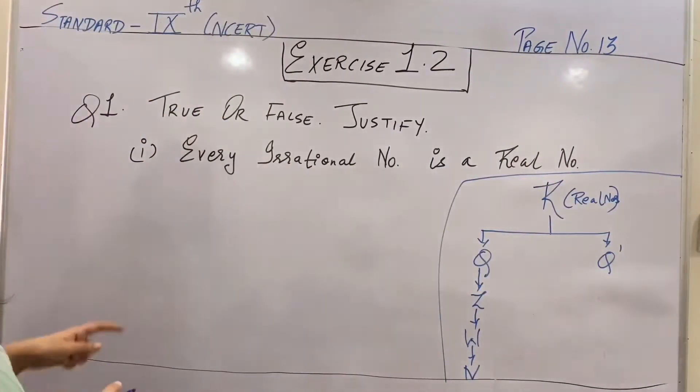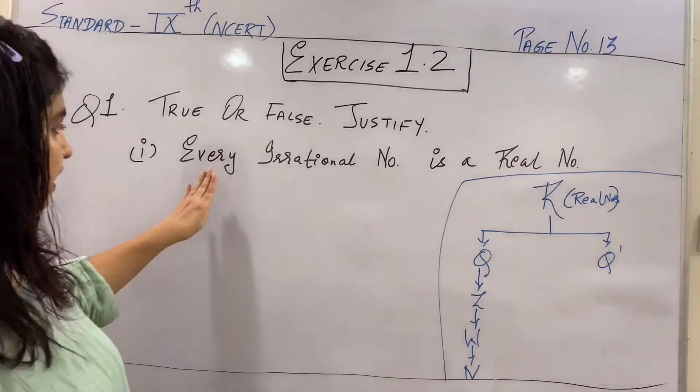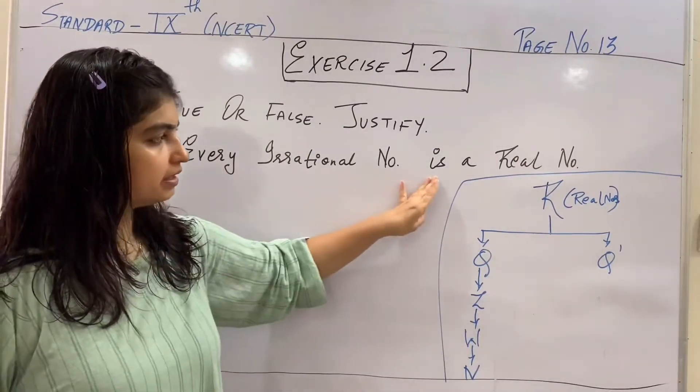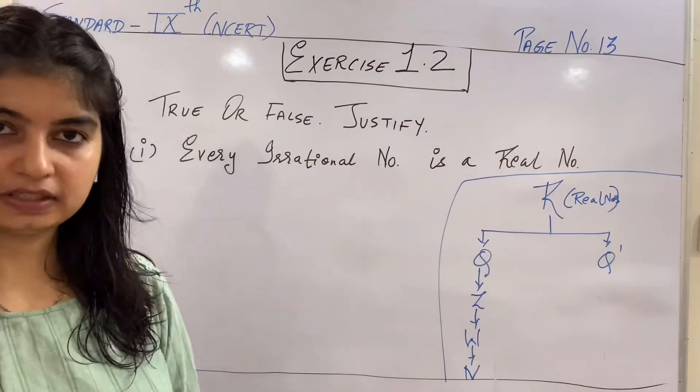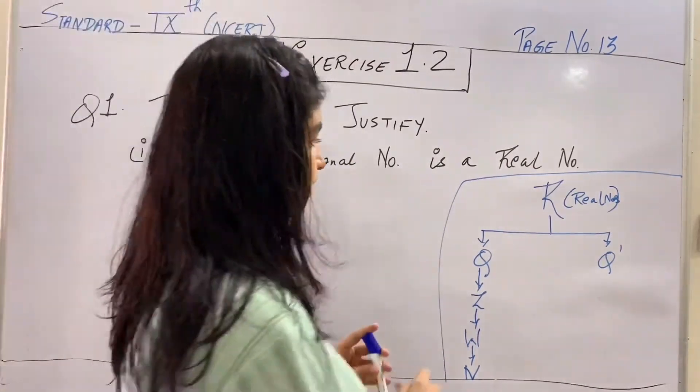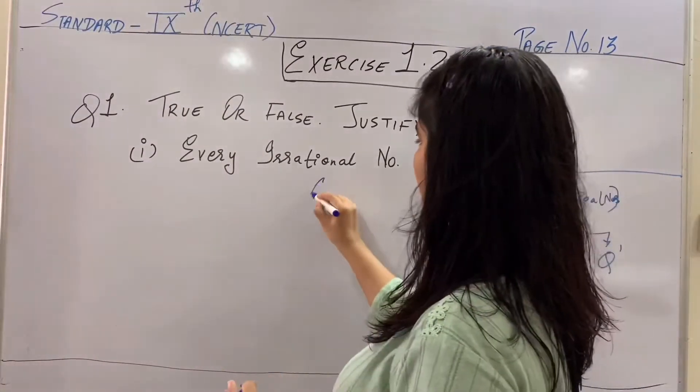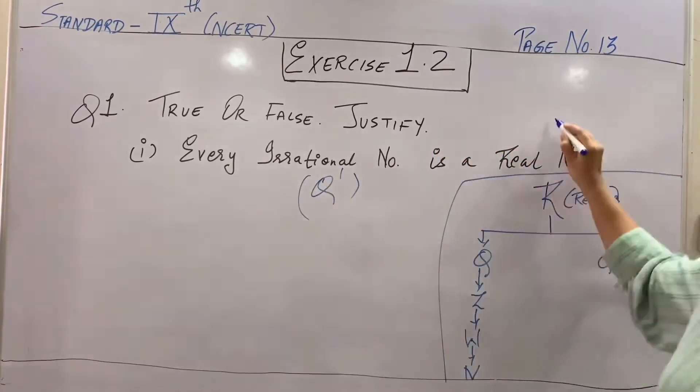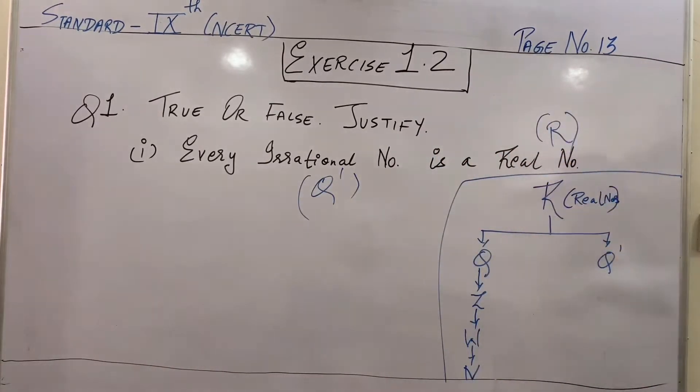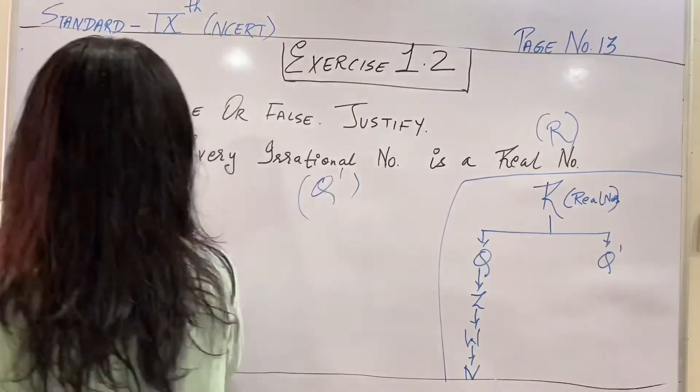So, pehla statement kya kehta hai? Every irrational number is a real number. So, what do you think guys? Every irrational number, that is Q dash, is a real number, that is R. Is it justified? Does it come below the real number? Yes. So, this statement is true.